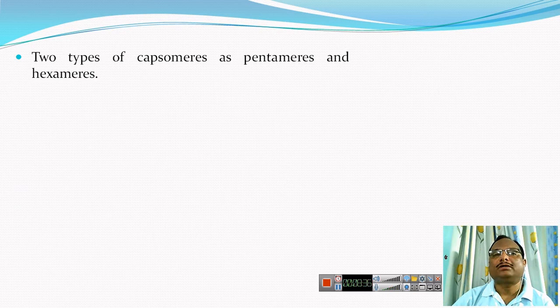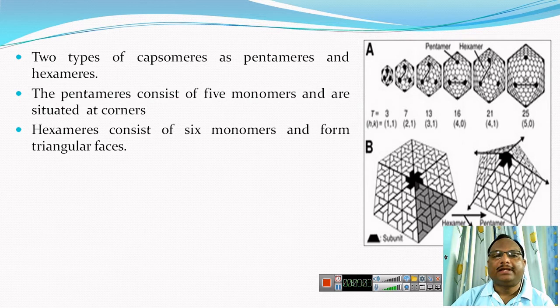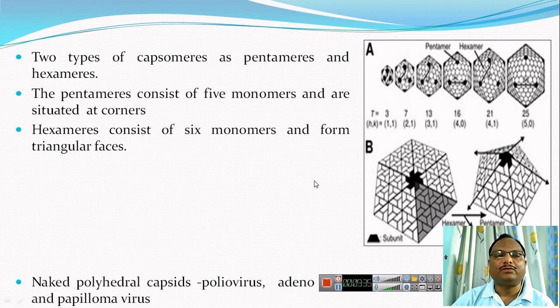Within the polyhedral capsid, there are two types of capsomeres: pentamers and hexamers. Pentamers consist of five monomers and are generally situated at the corners of the capsid. Hexamers consist of six monomers and are responsible for the formation of the triangular faces. As seen in the picture, the pentamer structure has five subunits and the hexamer structure has six subunits.